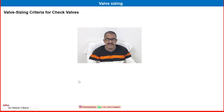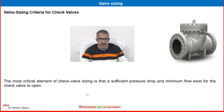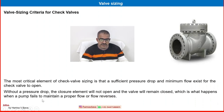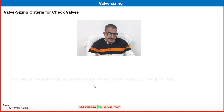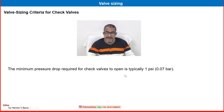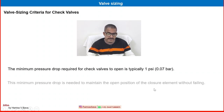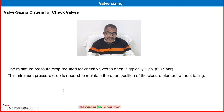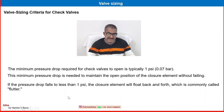Valve sizing criteria for check valves: the most critical element is that a sufficient pressure drop and minimum flow exist for the check valve to open. Without adequate pressure drop, the closure element will not open and the valve will remain closed, which is what happens when a pump fails to maintain proper flow. The minimum pressure drop required for a check valve is typically 1 psi or 0.07 bar, needed to maintain the open position of the closure element. If pressure drop falls below 1 psi, the closure element will float back and forth — commonly called flutter.